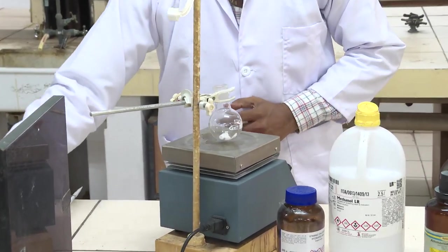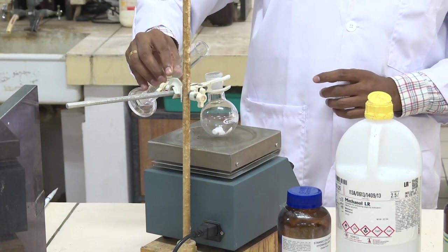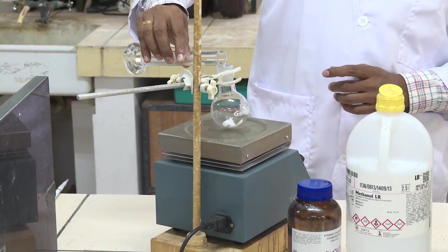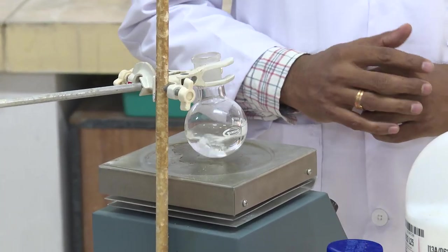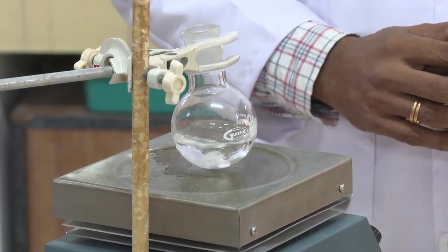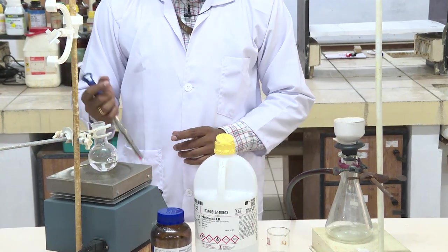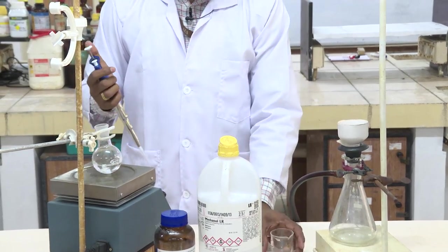Now I am going to add 30 ml methanol to dissolve this tin tetrachloride. You can see that the tin tetrachloride is completely dissolving in methanol. Now you can see that tin tetrachloride is completely dissolved in methanol.